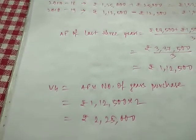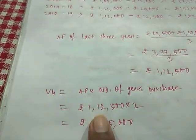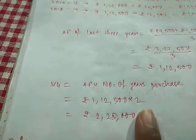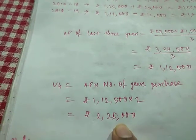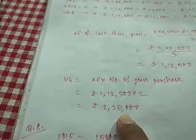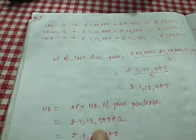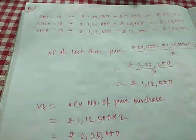I am sorry for the technical glitch. So the value of goodwill becomes 1,12,500 multiplied by number of years purchase, giving Rs. 2,25,000. In this way, we will solve the questions of average profit method on past adjustments.